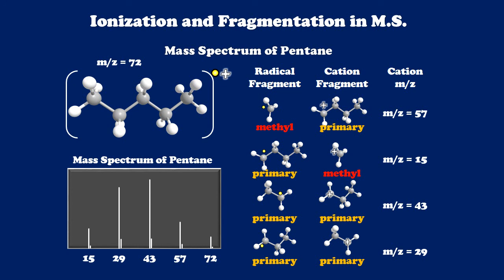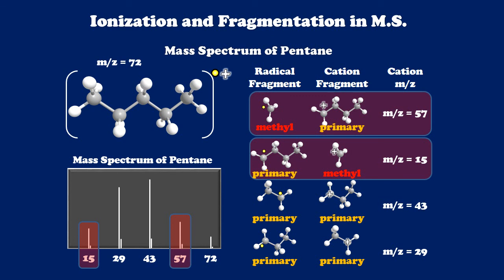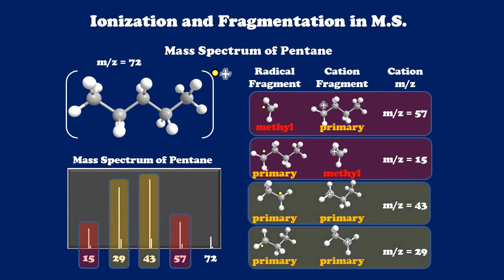Notice that the intensities of the peaks are not all the same, and there's a very good reason for this. It's the relative stability of the radical and cation pair in a fragmentation process that determines how much of that fragment will be present. In situations where we created a methyl radical or methyl cation — which is of lower stability — we see smaller peaks, as in the 15 and 57 peaks. Whereas fragmentation processes which created primary radicals and primary cations led to larger peaks at 29 and 43. In the case of pentane, it fragments fairly well, meaning the molecular ion at 72 is actually one of the smaller peaks in the spectrum. This is the power of mass spectrometry: it gives us a fingerprint with which to characterize organic molecules.